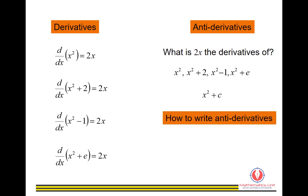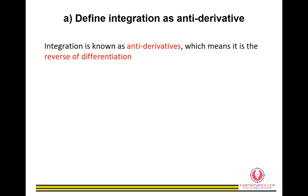So how do we write the anti-derivative? To write the anti-derivative, we use the elongated S notation: ∫2x dx = x² + c. We can conclude that integration is the reverse of differentiation.